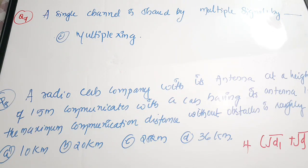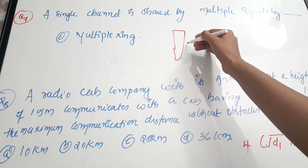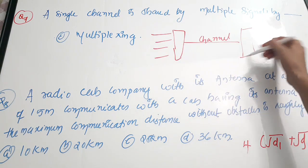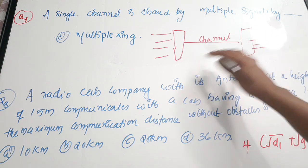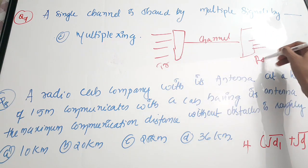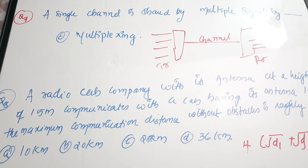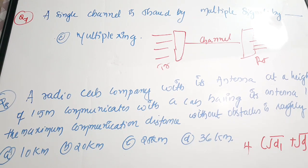Question 7: a single channel is shared by multiple signals by the process called — this is a very simple question. The correct answer is option C, multiplexing. If you draw the figure of a multiplexer, multiple signals enter through a single channel; demultiplexing occurs on the receiver side. Angle modulation and phase modulation are not sharing of a single channel by multiple signals.